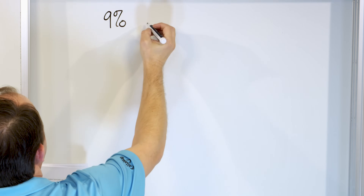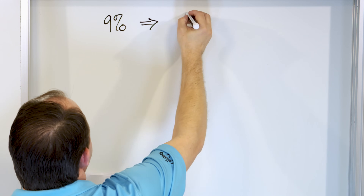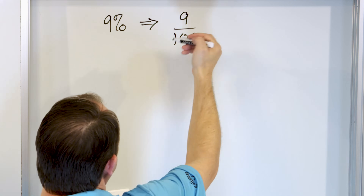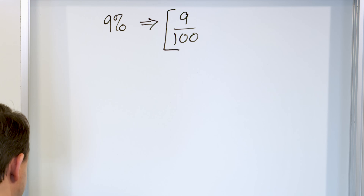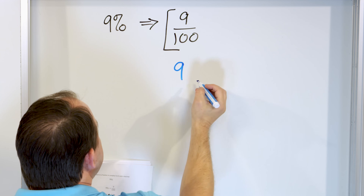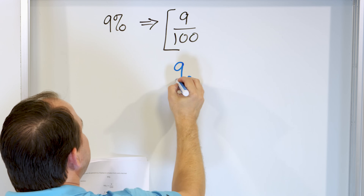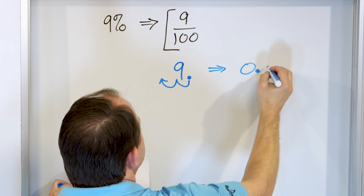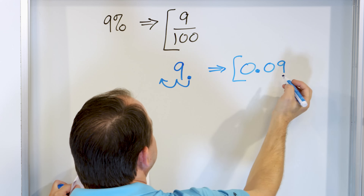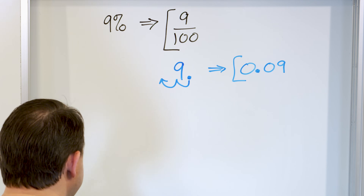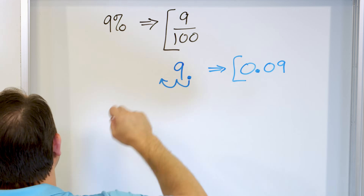All right, we're on the home stretch. Let's look at 9%. To convert to a fraction, it's 9 out of 100 — I can't simplify this, so the fraction stays as 9/100. To convert to a decimal, I take 9 with a decimal point at the end and move it two spots to the left. I have to insert a zero, making it 0.09. So 0.09 is the decimal equivalent and 9/100 is the fraction equivalent of 9%.